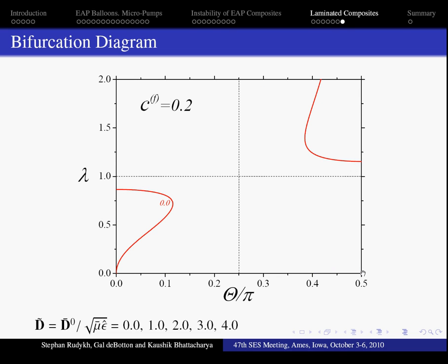Next, we present a complementary example for the composite with inclusion volume fraction C^f 0.2. The failure surfaces are plotted in the coordinates of lamination angle θ and stretch λ. The red curve corresponds to pure mechanical case in the absence of electric excitation. And these curves correspond to normalized electric excitation 1, 2, 3 and 4.